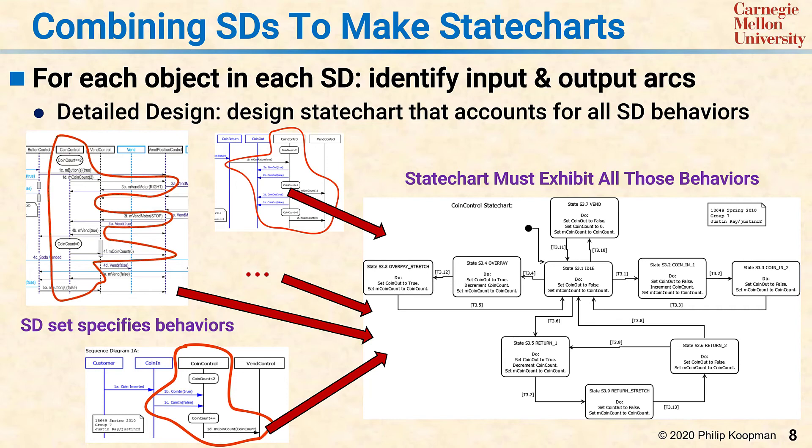In practice, people aren't too bad at this as long as you narrow it down to a state chart for a single object, and you iteratively go back and forth between the state chart and the sequence diagrams to make sure all the behaviors are accounted for.